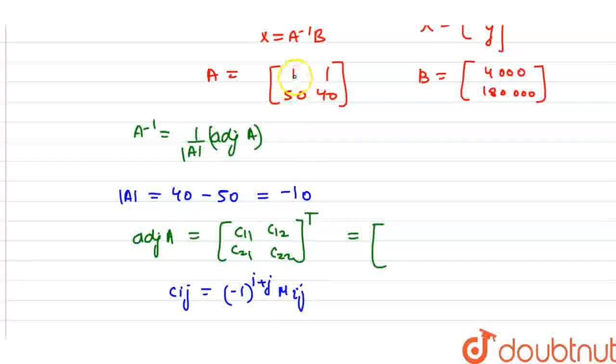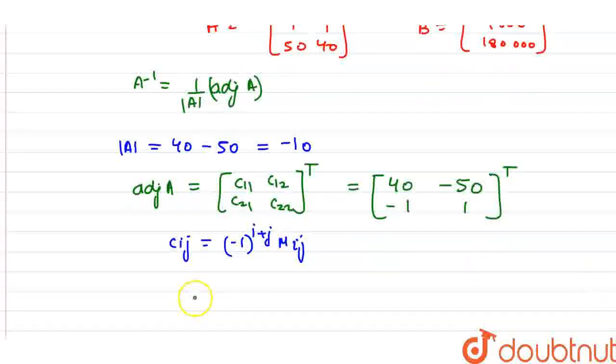C11 is 40. C12 is negative 50 because 1 plus 2 gives a negative sign. C21 is negative 1, and C22 is 1.